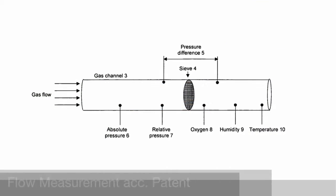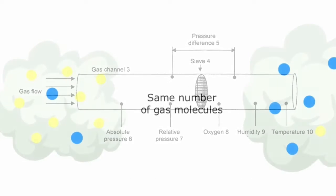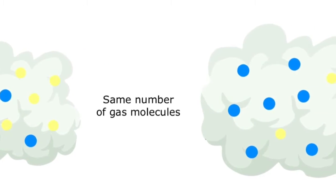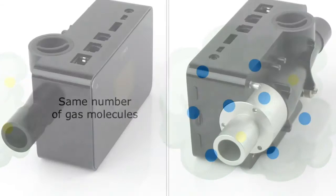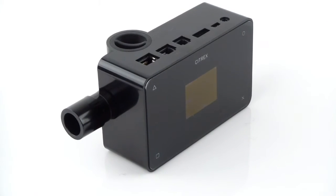Therefore flow measurement has to be referred always to its conditions measured. The same number of gas molecules can occupy a different volume, depending on temperature, humidity and gas type or mixture. This has to be taken into account, otherwise flow and volume measurements can be wrong.